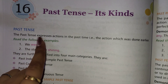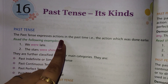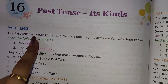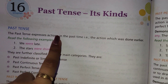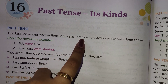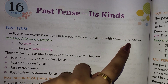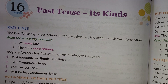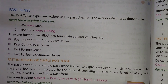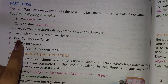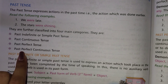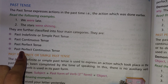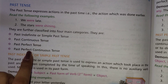Past tense expresses actions in the past time. We express those actions which have been done in the past — actions which were done earlier and have been completed. As you can see, there are four types or categories of past tense. Today we will study past indefinite, also known as simple past tense.